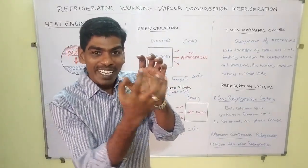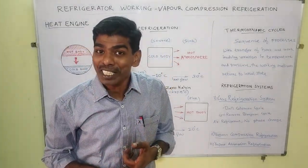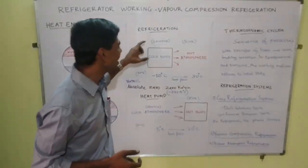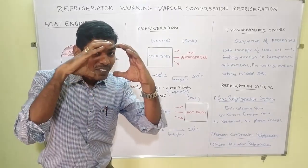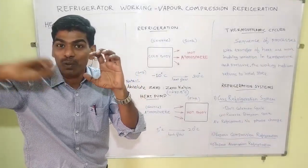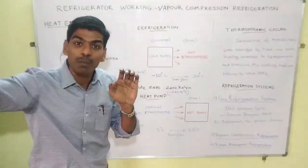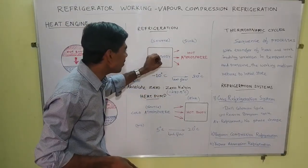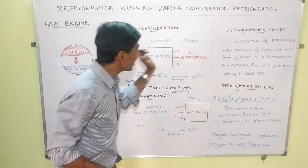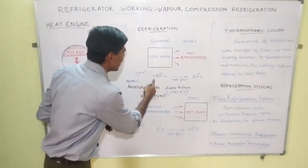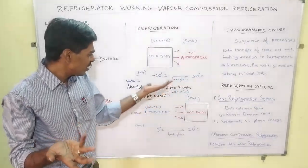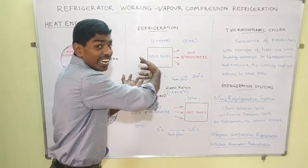This is what is needed in refrigeration — we need to transfer heat from an object to a hotter region. In refrigeration, we confine a space and maintain a temperature lower than the atmosphere, taking heat from inside and extracting it to the atmosphere. For example, the source may be at minus 10 degrees centigrade and the atmosphere at 30 degrees centigrade, and heat is taken from the source and given to the atmosphere.